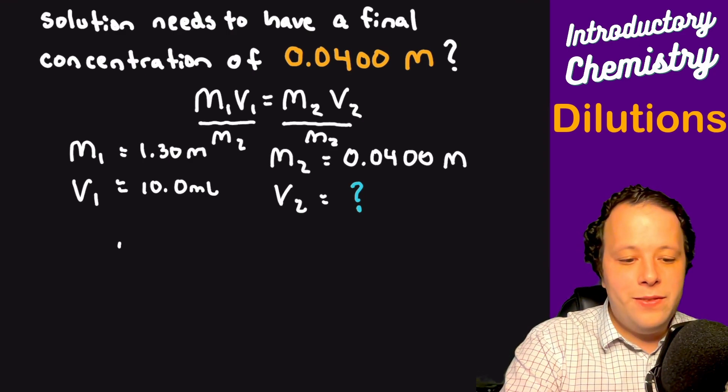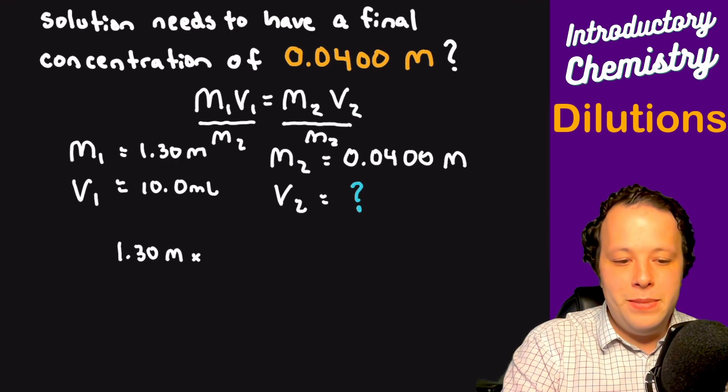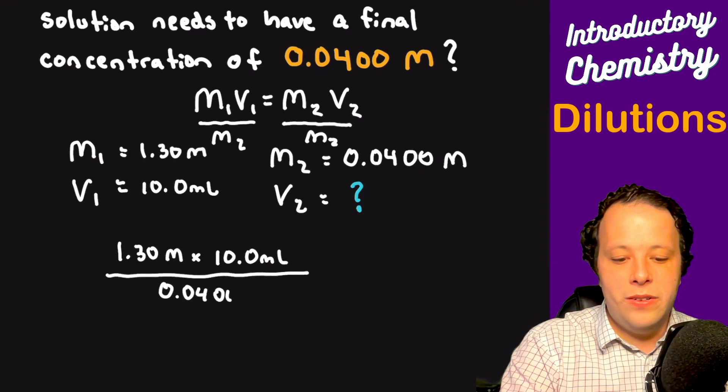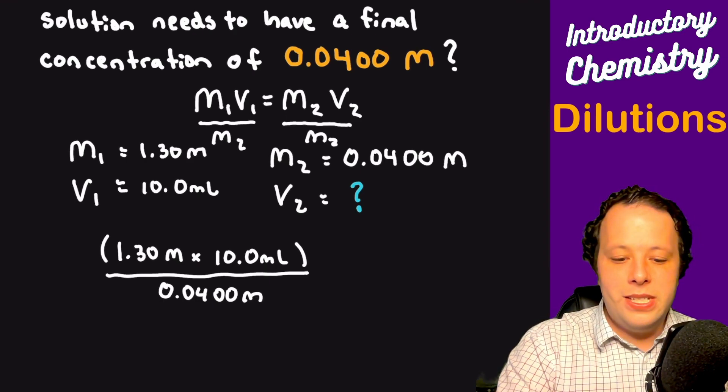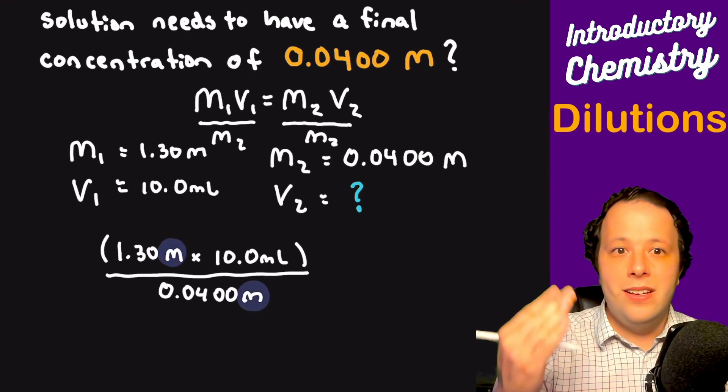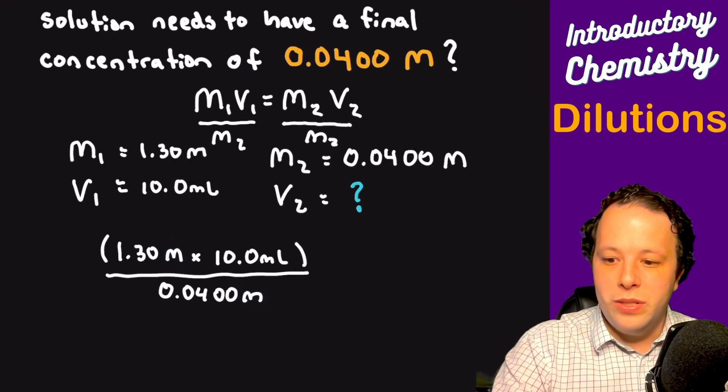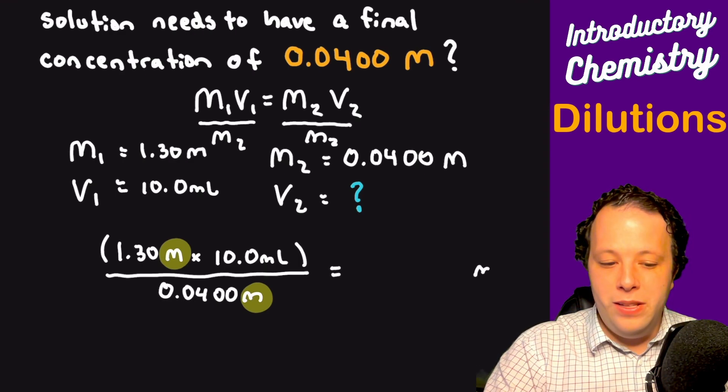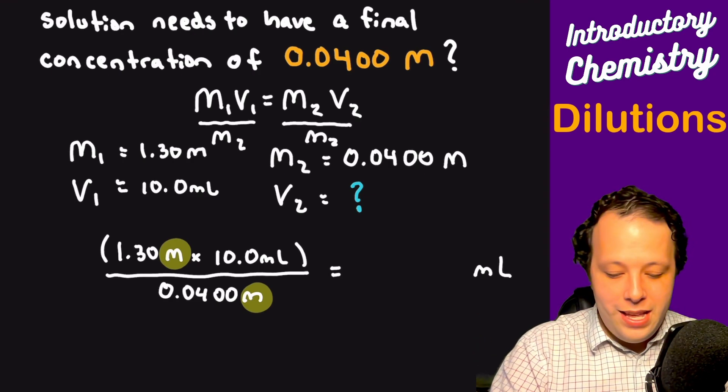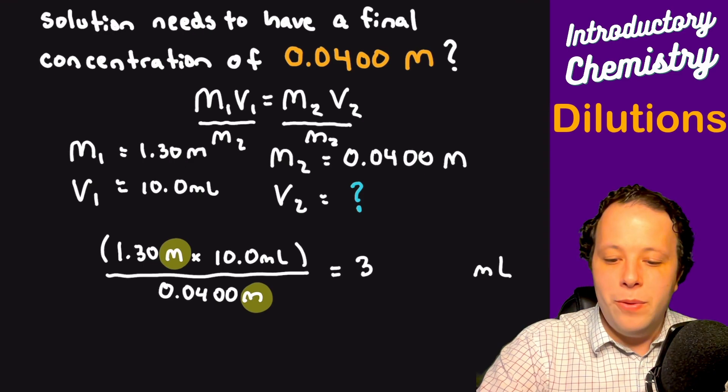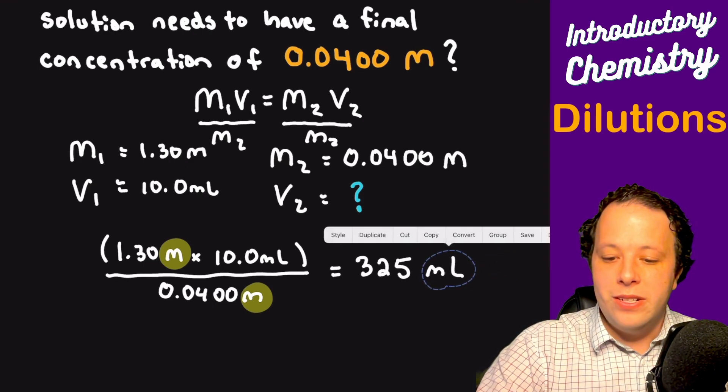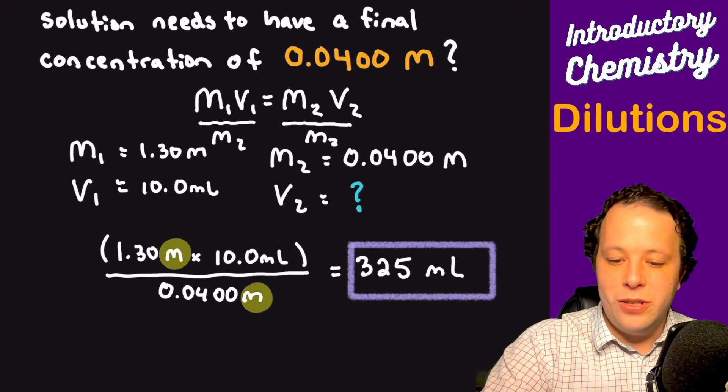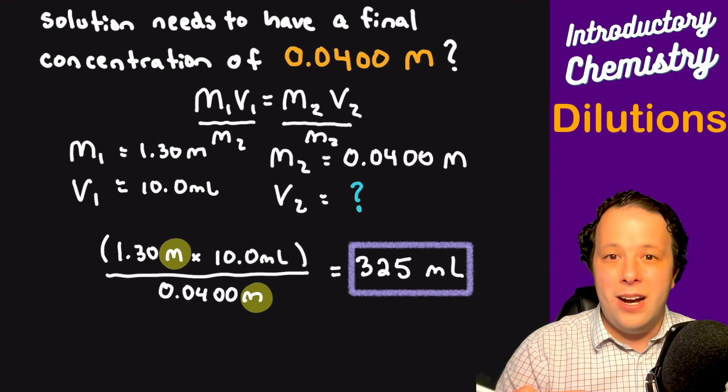We'll take 1.30 molar times 10 milliliters and divide that by 0.0400 molarity. One thing you'll notice is the molarity units are going to cancel each other out, which is really important to realize. This will leave you only with milliliters. So we're going to do 1.3 times 10 and divide that by 0.04, and we'll get 325 milliliters of our solution. This will be your final answer for your first dilution problem. Not too bad, right? This is the general idea of how we put all these together.